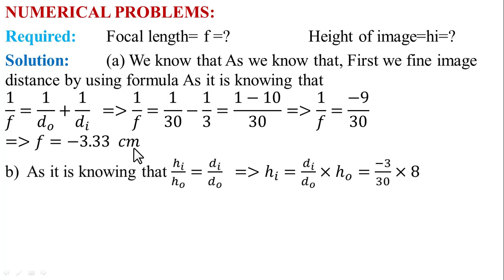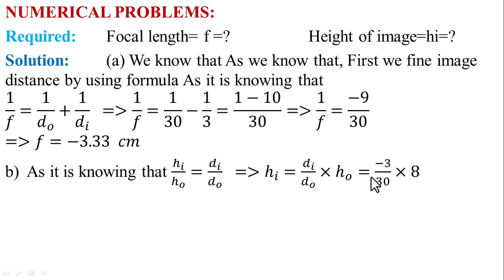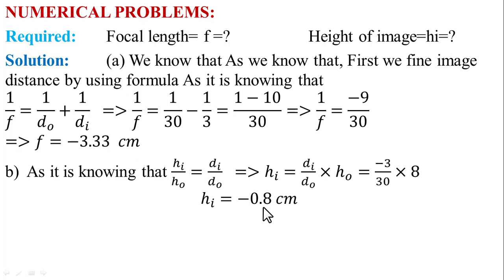For part B, using Hᵢ/H₀ = Dᵢ/D₀. So Hᵢ = (Dᵢ/D₀) × H₀ = (−3/30) × 8. The height of image Hᵢ = −0.8 cm.